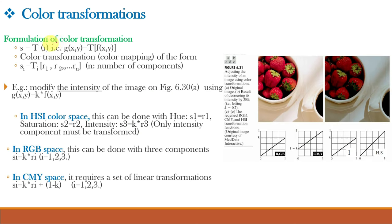Let us understand the formulation of color transformation. From grayscale image transformation, we know that S = T(R), where R is the input pixel, S is the output pixel and T is the transformation function. The same function can be extended for color transformation by using the equation Si = Ti(R1, R2, ... Rn), where n is the number of color components which is equal to 3. Here, Ti is a set of transformation or color mapping functions that operate on Ri to produce Si.